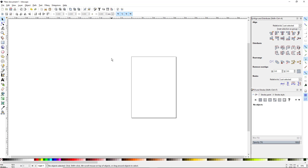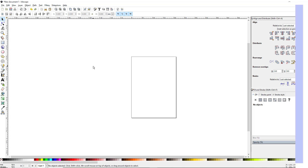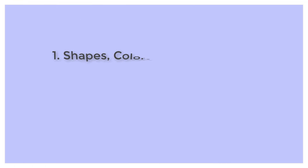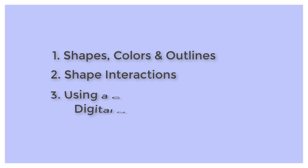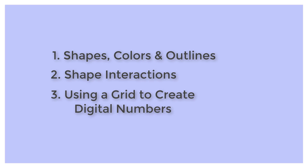But there are three things that I wanted to focus on today. First one is going to be how to create shapes and work with color and outline. Number two is I want to show you how two shapes can interact with one another so you can create differences between the two using the overlap. And then the third one, I'm going to use a grid to create a digital number. Those three things will just give you an idea of how some of the tools work in this program. So let's go ahead and get started.